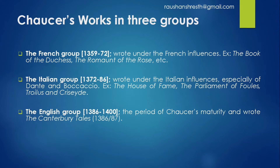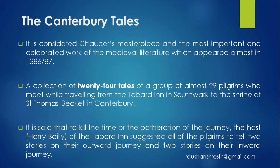The last group is the English group, from around 1386 to 1400. The Canterbury Tales is considered Chaucer's masterpiece and the most important and celebrated work of medieval literature, which appeared almost in 1386 or 1387. Chaucer's work is very important in English literature and is the best example of medieval literature.